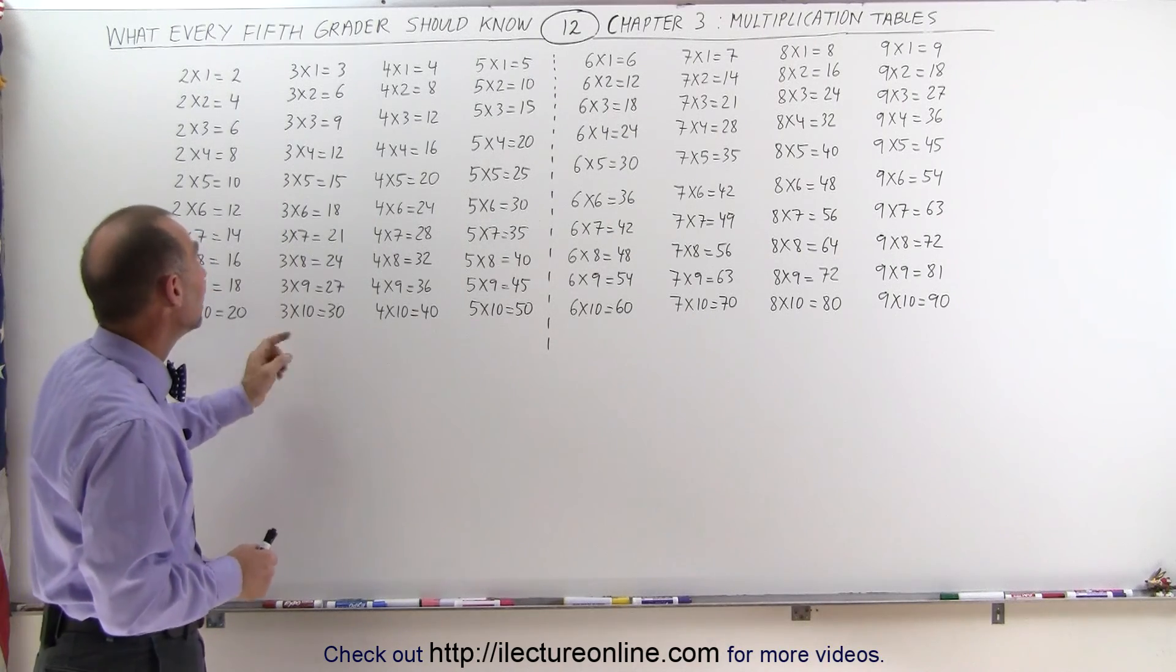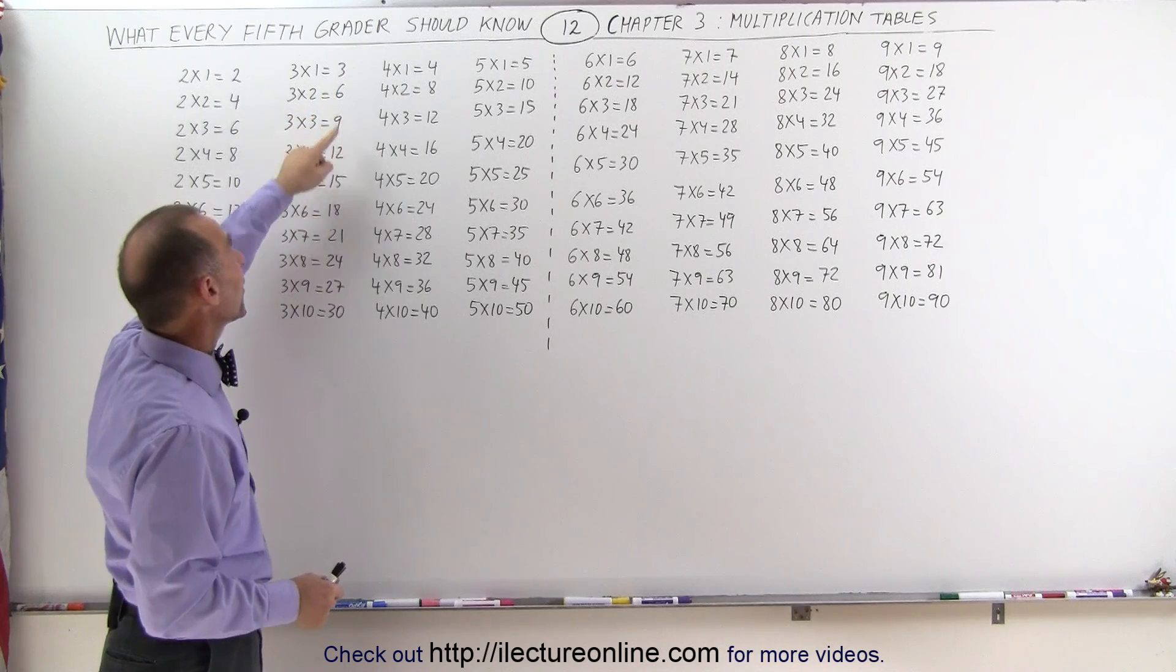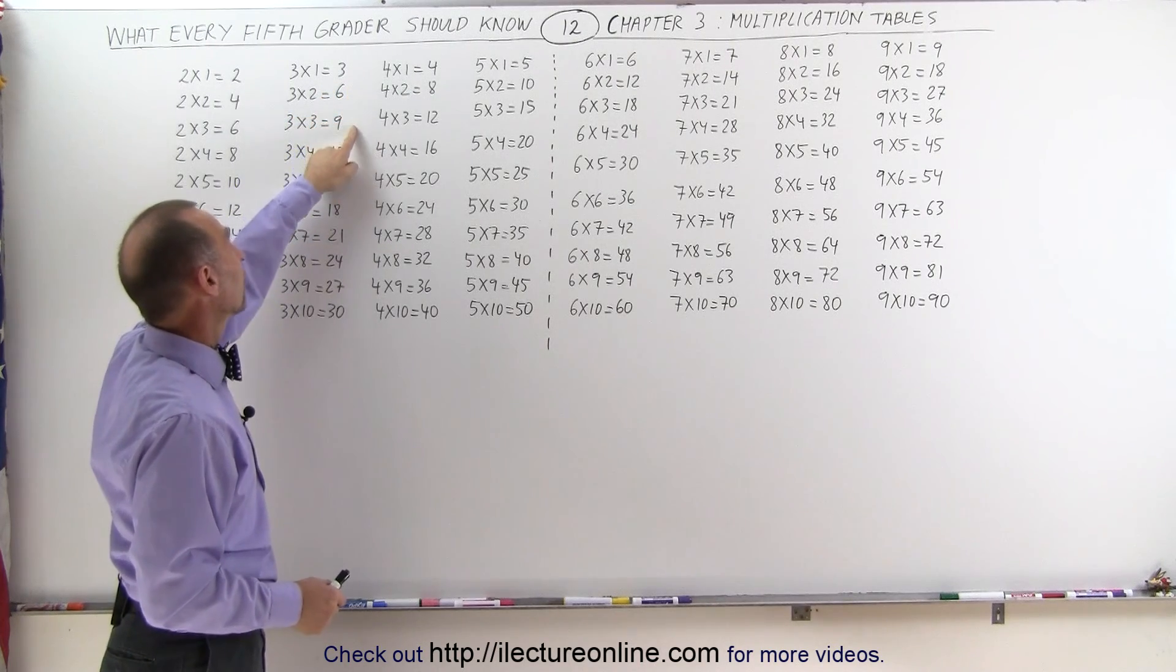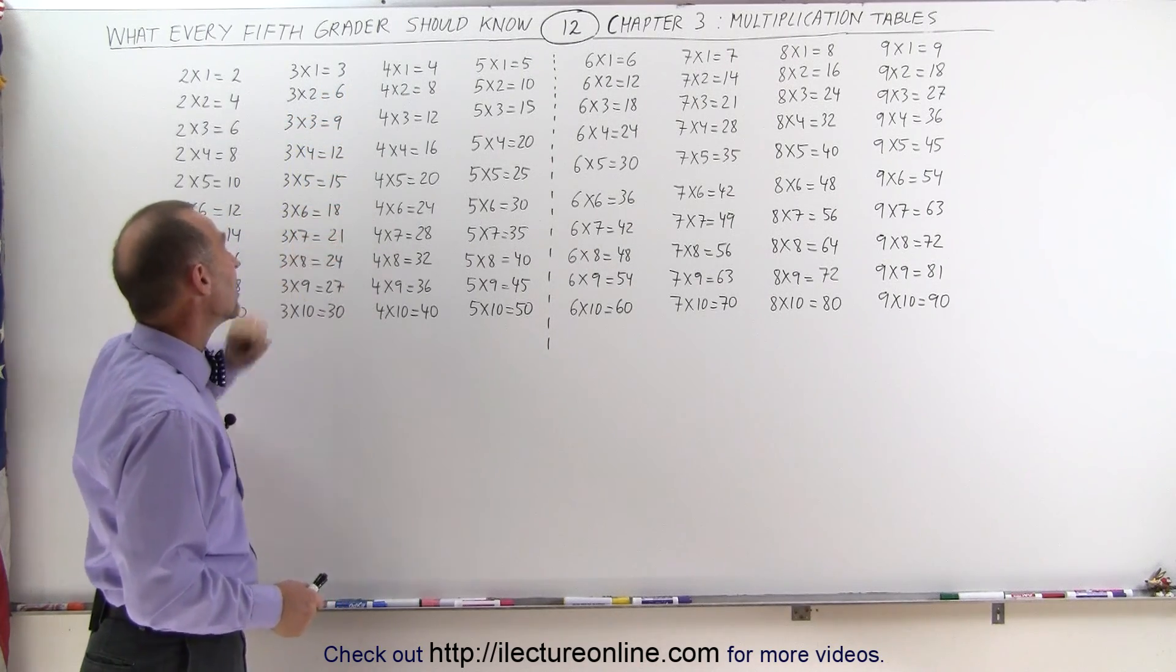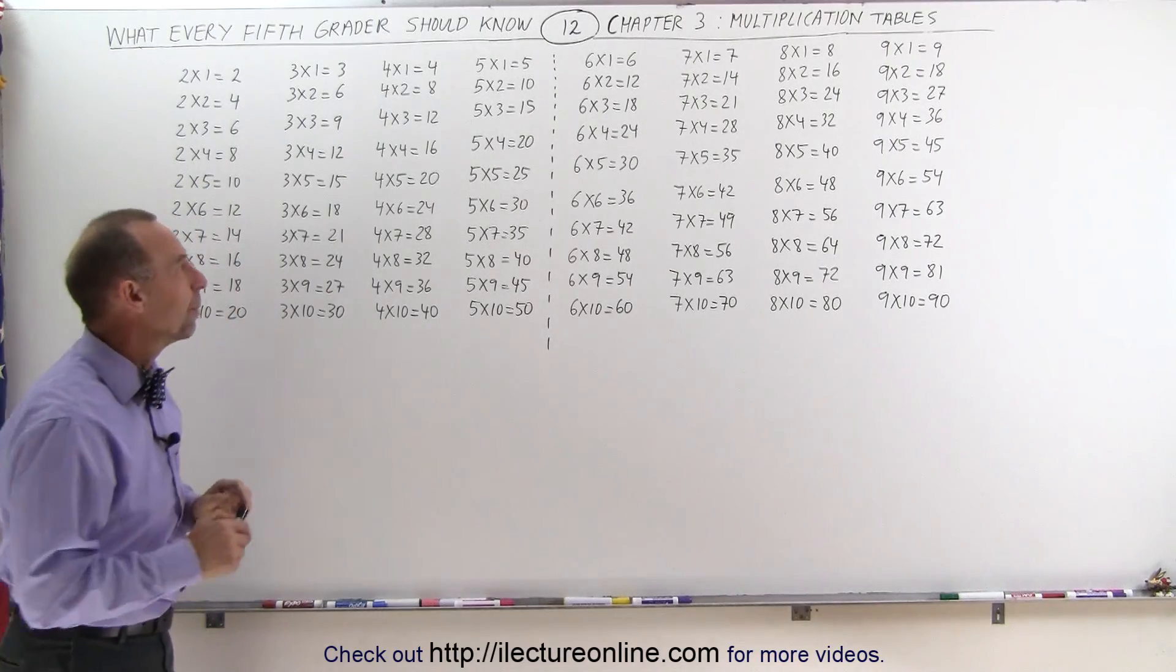Even when we multiply times 3, again, notice that the numbers jump up by 3: 3, 6, 9, 12, 15, 18, 21, and so those are not that bad to remember.